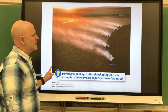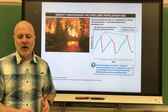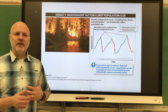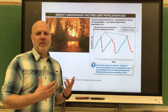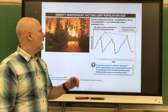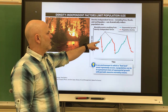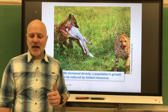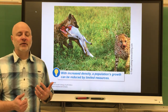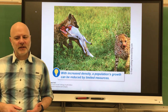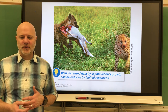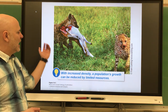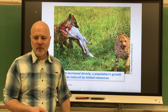Influences on population density include density-independent effects — abiotic, non-living factors that regulate growth regardless of population size, such as natural disasters, hurricanes, floods, and fires. Population growth occurs and then a natural disaster knocks it back down. In contrast, density-dependent effects depend on the size of the population, including predation, competition for resources, and parasitism. As the population gets larger, these effects become stronger — as shown here with competition between two different organisms for a resource.